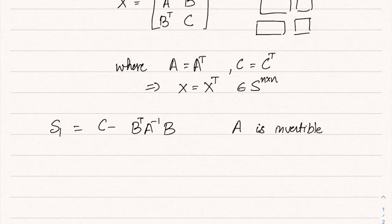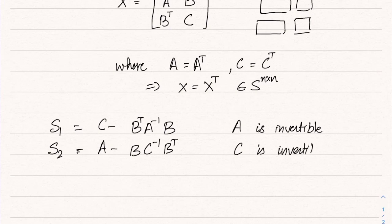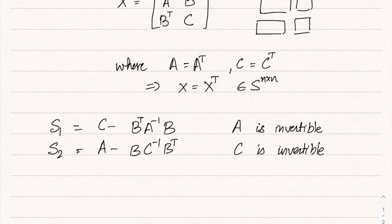So as long as A is invertible, this is the Schur complement. Another one is A minus B C inverse B transpose, and again this requires that C should be invertible. So depending on whether A and C are invertible, neither or both or one of these could be defined.